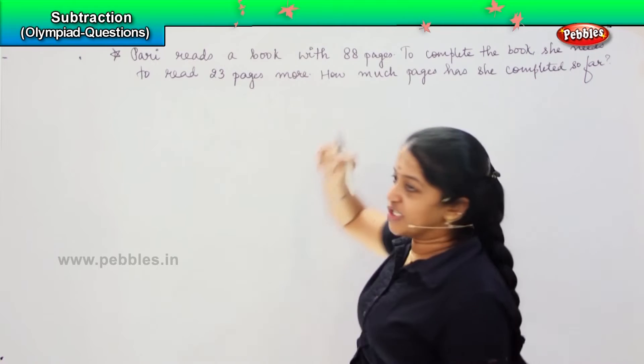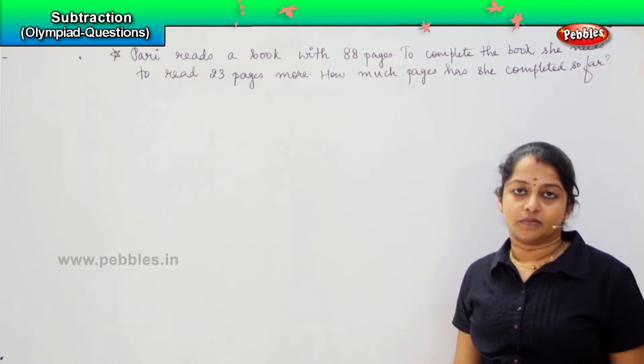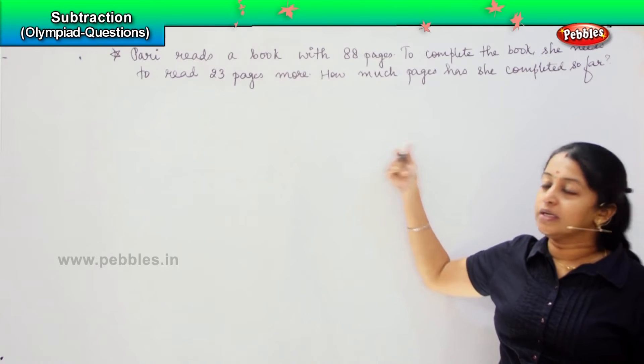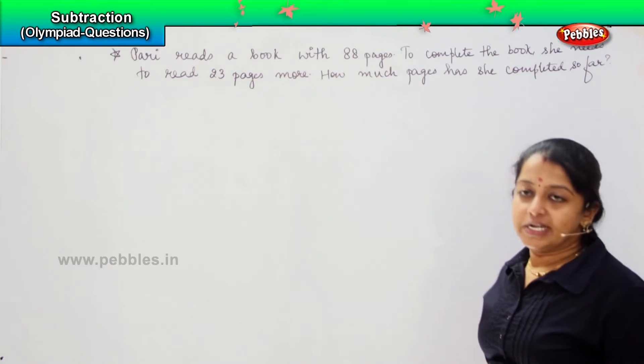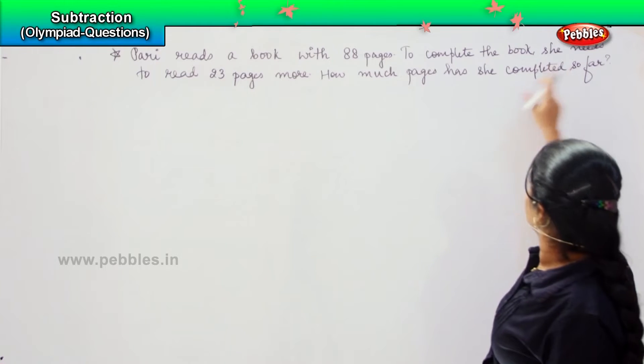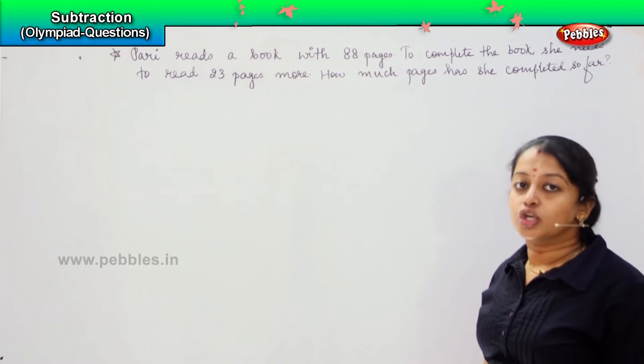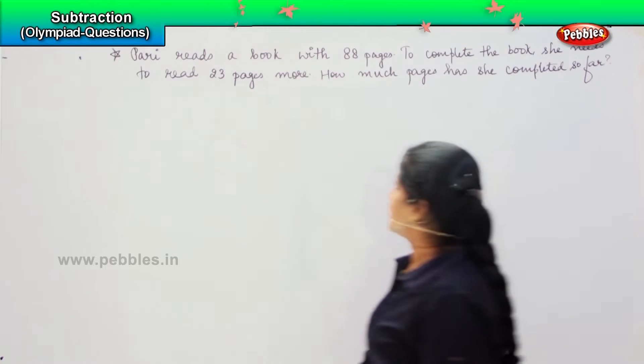The previous question we found out how many pages are remaining, right? But in this question, they are saying that she is having a book with 88 pages in which in order to complete the book, she has to read another 23 pages. So we need to find out how many pages has she already completed.